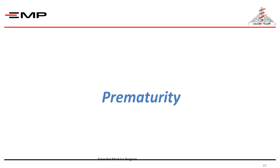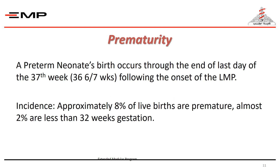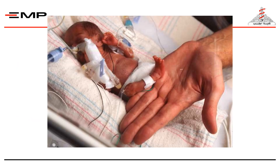Now we will discuss the preterm neonate, or prematurity. A preterm birth occurs before the end of the last day of the 37th week following the onset of the last menstrual period — less than 37 weeks of gestation. The incidence is approximately 8% of live births, with almost 2% being less than 32 weeks of gestation.